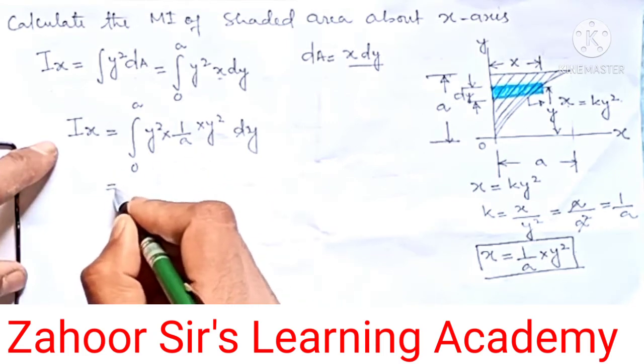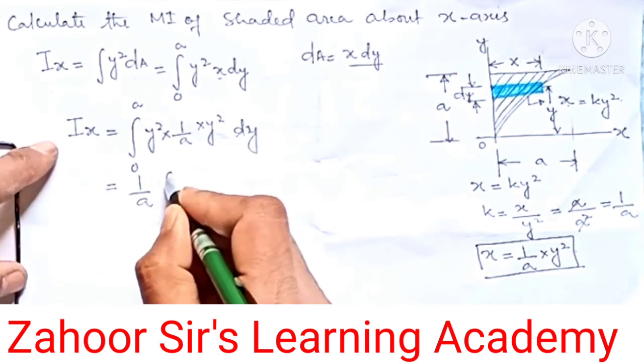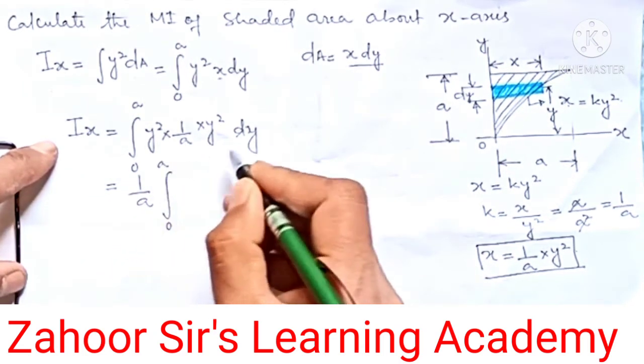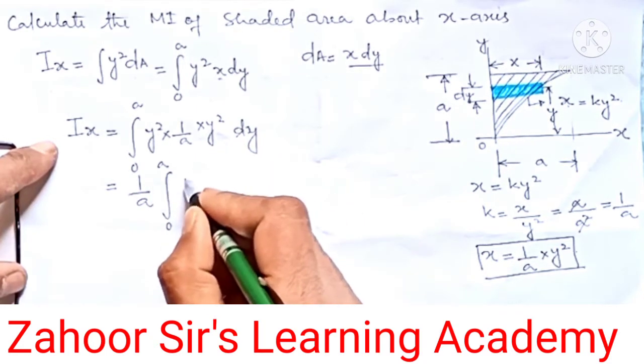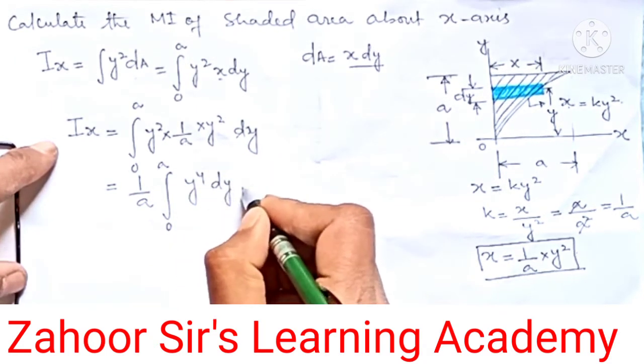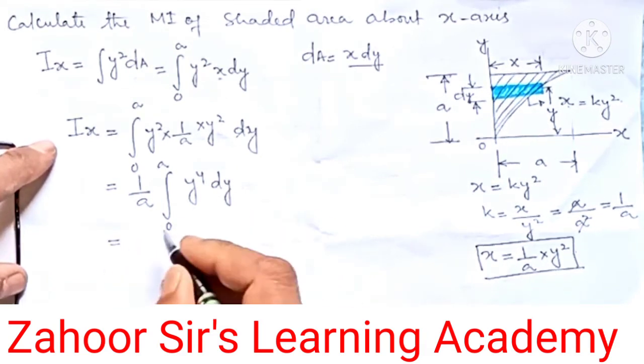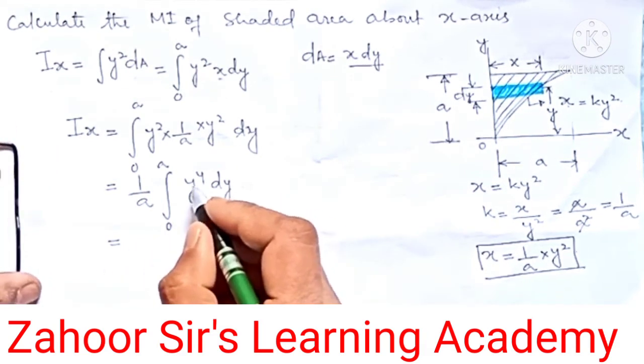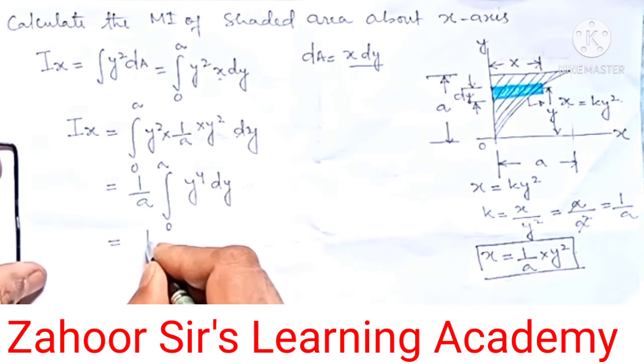Integral from 0 to a. This y squared times y squared means y to the power of 4, dy. Now let's do the integration of this. So it means (1/a) times y to the power of 5, divided by 5, from 0 to a.